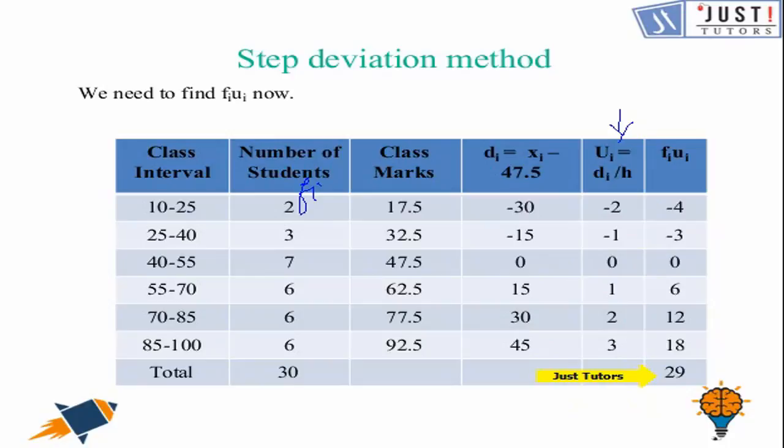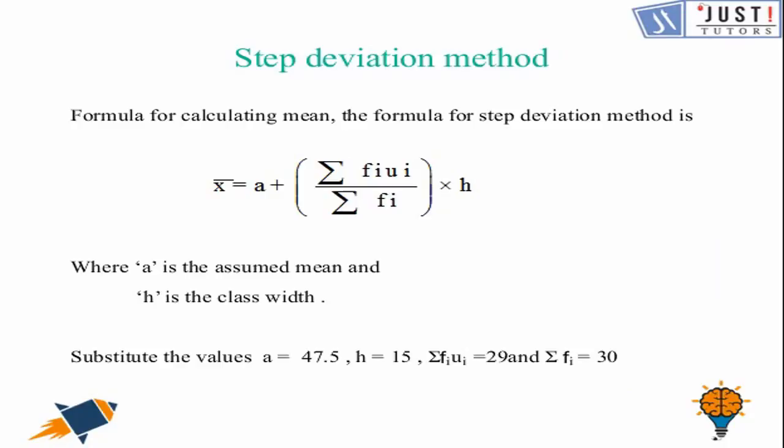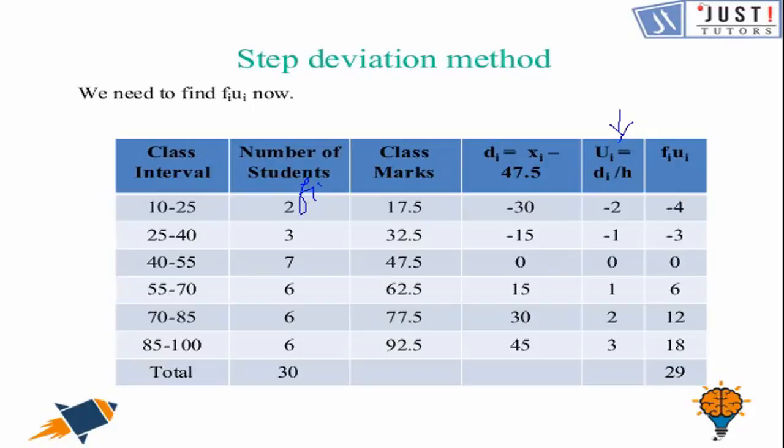And now of course we have a formula to find out the mean through step deviation method. Which is x bar is equal to a plus sigma fiui divided by sigma fi times by h. Where h is the class width and a is the assumed mean. So we can find out all the values with the help of the table that we have just found out.